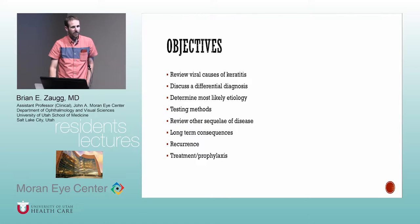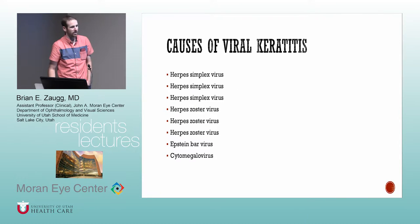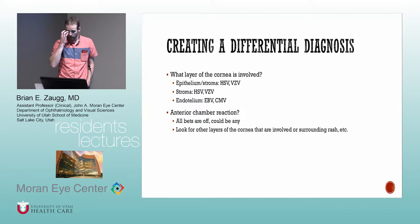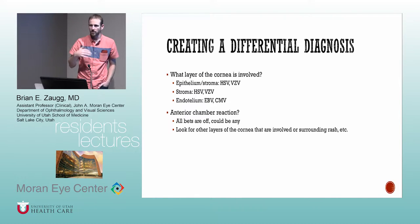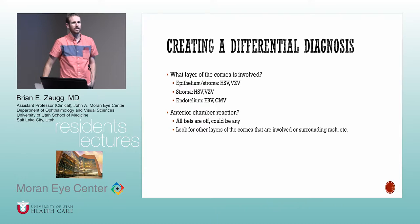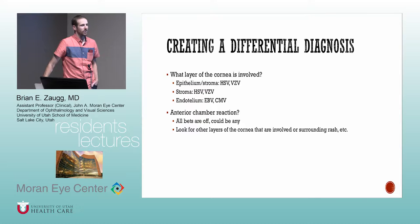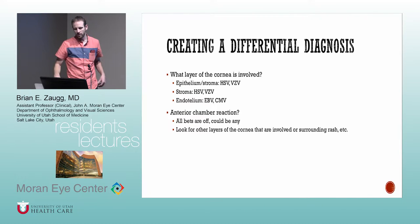When thinking about viral keratitis, the causes are essentially herpes — herpes simplex, herpes zoster — and then Epstein-Barr virus and CMV can sometimes play a role, but most commonly these are herpes viruses. When evaluating a patient, figure out what part of the cornea is involved: is it epithelial, stromal, endothelial? Is there an anterior chamber reaction, hypopyon, or high pressure?